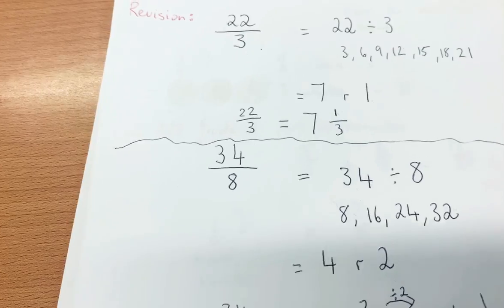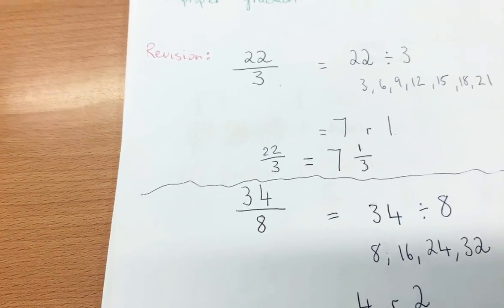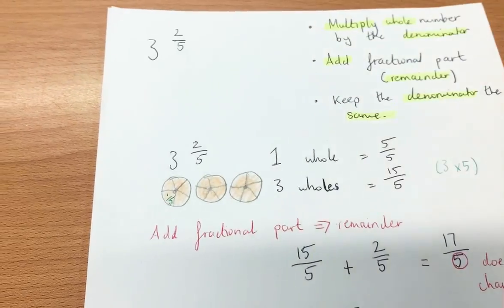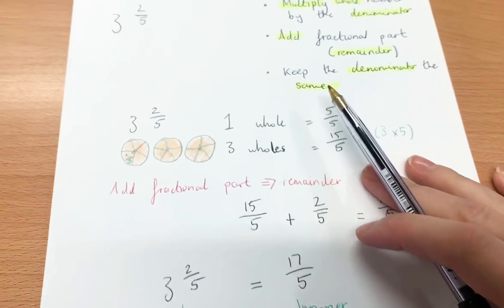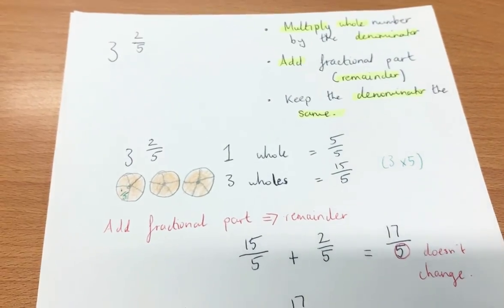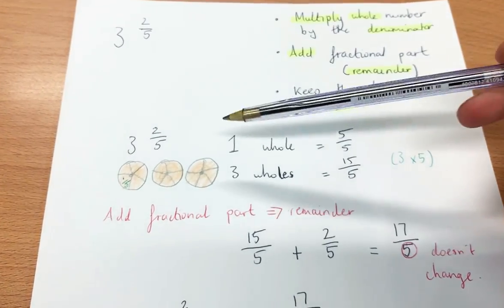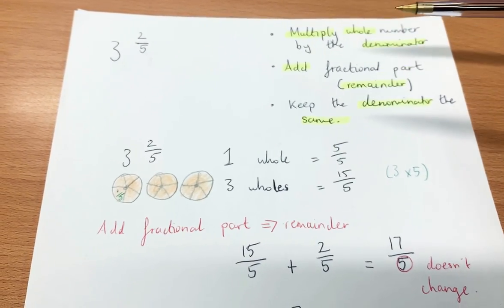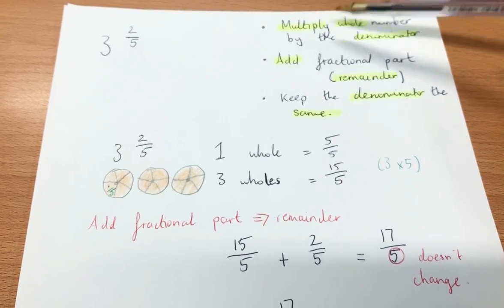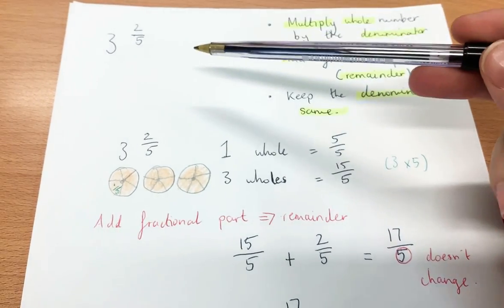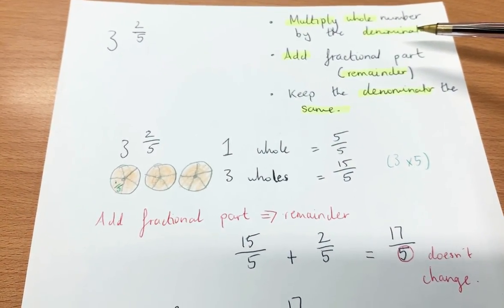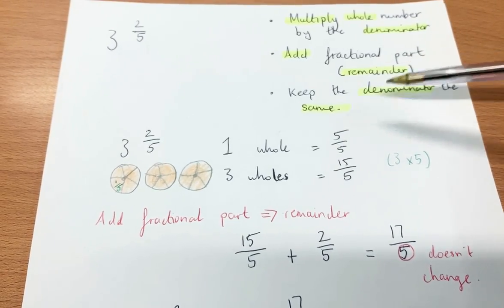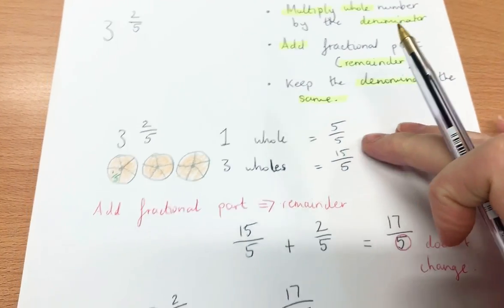So that is converting an improper fraction to a mixed number, and now we're going to convert a mixed number to an improper fraction. When we're converting, we must remember a few things: we multiply the whole number by the denominator, we add the fractional part which is the remainder, and we keep the denominator the same. So we're going to go through this now.